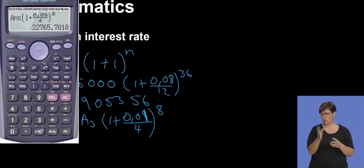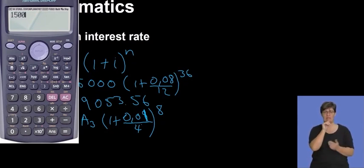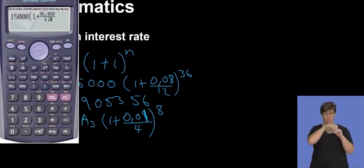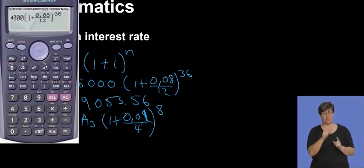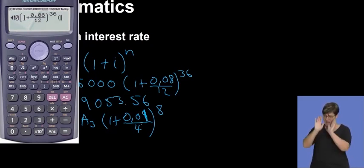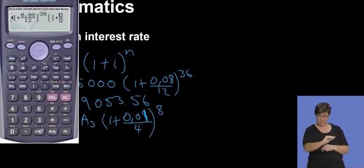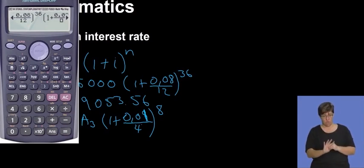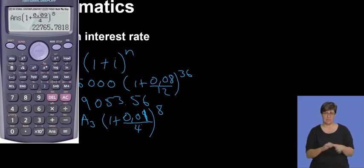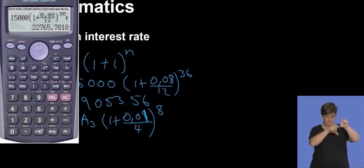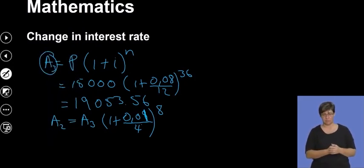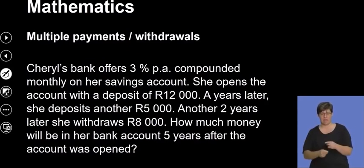Instead of doing it in two steps, you can do it in one long calculation: 15 000 × (1 + 0.08/12)^36 × (1 + 0.09/4)^8. This gives the very same answer. So you can either do one long calculation or break it into parts depending on your preference — both approaches work.